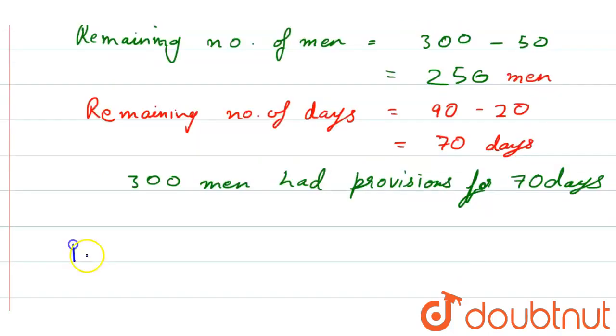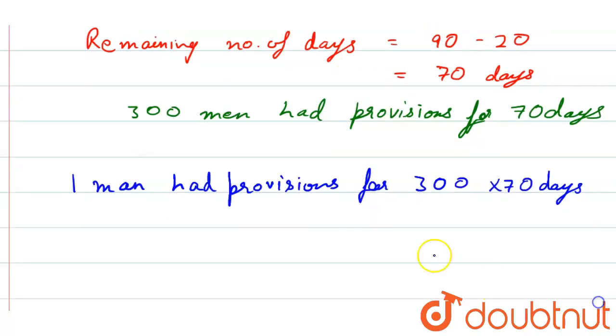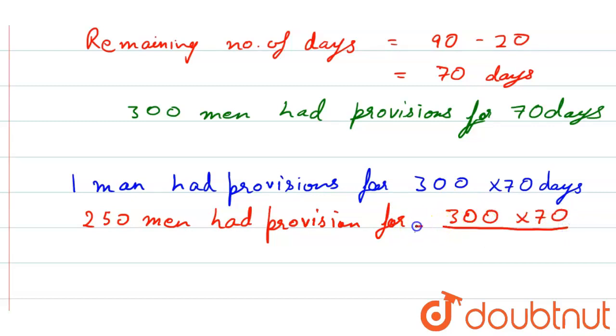Now, we can write, one man had provisions for 300 into 70 days. Now, we can write,